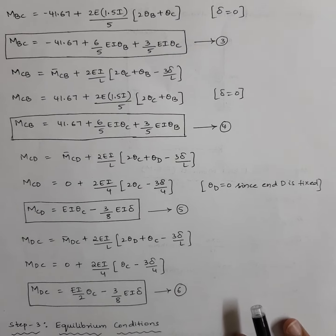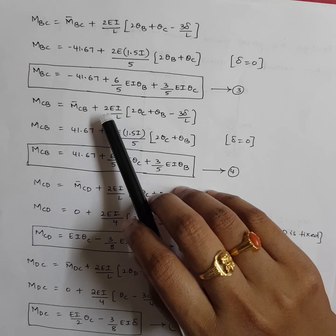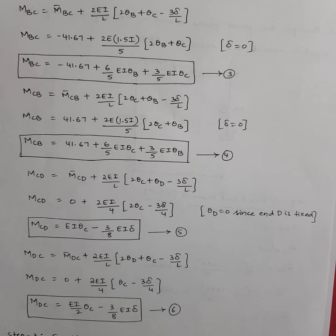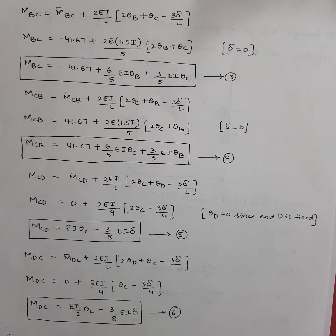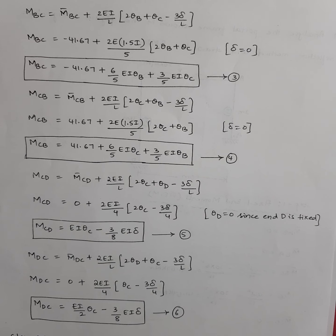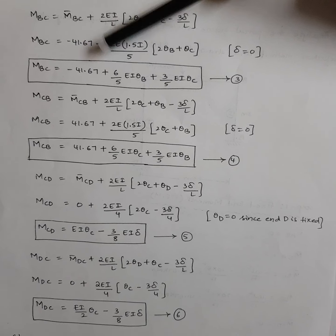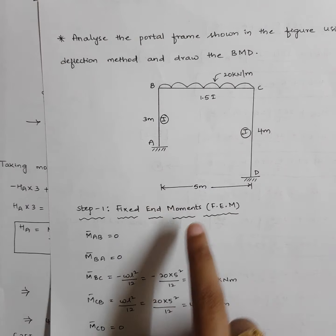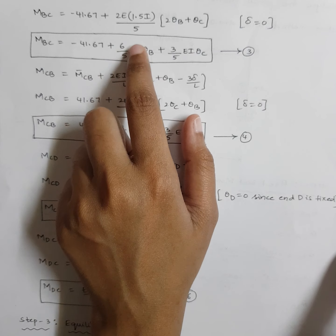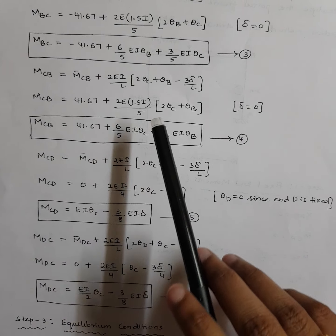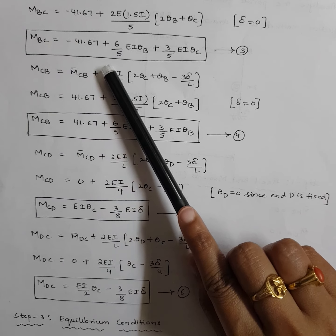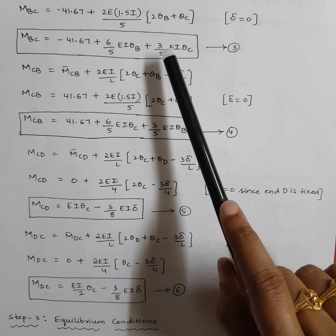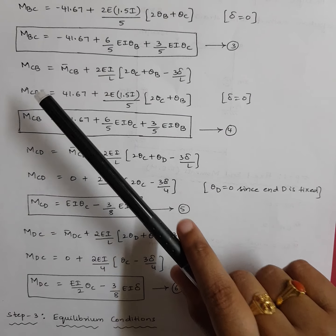For MBC: this is the beam part, so delta is zero. MBC = M-bar BC plus (2E·1.5I/5)·(2θB + θC). M-bar BC is minus 41.67. With I = 1.5I and span = 5, MBC = −41.67 + (6/5)EI·θB + (3/5)EI·θC. This is equation number 3. Similarly for MCB: MCB = 41.67 + (6/5)EI·θC + (3/5)EI·θB, which is equation number 4.